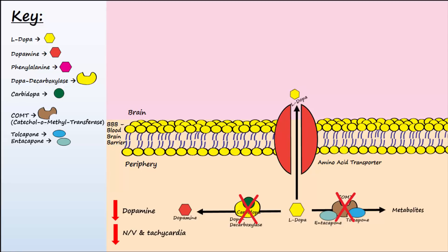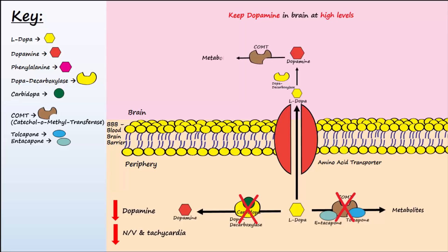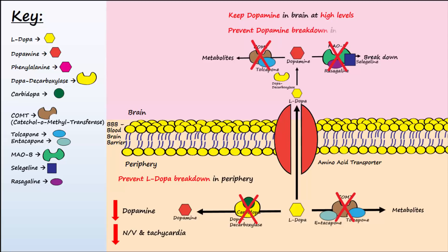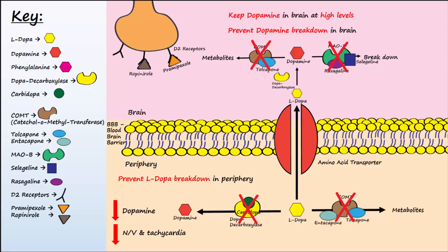After L-DOPA reaches the brain, it is converted into dopamine by decarboxylase in dopaminergic neurons. It is important at this point to keep the dopamine in the brain at high levels and prevent its breakdown. COMT in the brain can be inhibited by tolcapone. Monoamine oxidase, also known as MAO-B, is located in the brain and breaks down dopamine — it can be inhibited by selegiline and rasagiline to prevent the breakdown of dopamine in the brain. D2 receptor agonists like pramipexole and ropinirole can also be given to mimic the effects of dopamine as they bind to dopamine receptors.